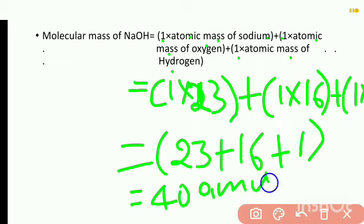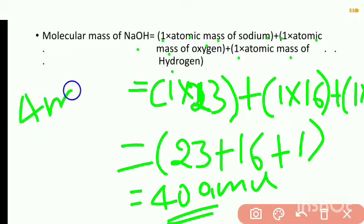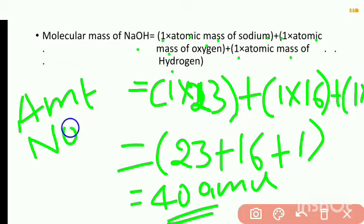40 atomic mass units is the molecular mass of sodium hydroxide. Similarly, the amount of sodium in sodium hydroxide will be 1 — that is the number of sodium atoms present — multiplied by 23, giving 23 atomic mass units.